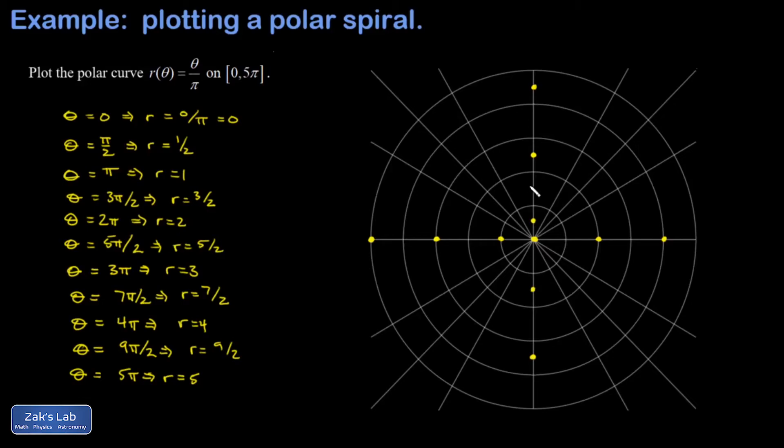To see how all these points are connected by a smooth spiral, it helps to look at some of the smallest angles. If I put in θ = π/6, I get r = 1/6, so very small. Put in θ = π/4, I get 1/4. θ = π/3 gives 1/3. Then you start to get a sense for how it could all be connected by a smooth spiral.